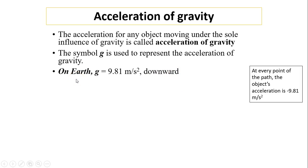On Earth's surface means anywhere close to Earth's surface — could be 1 meter, 3 meters, 10 meters, or even 100 meters above Earth's surface. As long as it's not too far, not like astronauts going into space. Tall buildings and tall mountains are still near Earth's surface. So near Earth's surface, g equals 9.81 meters per second squared is the value we use in regents physics.